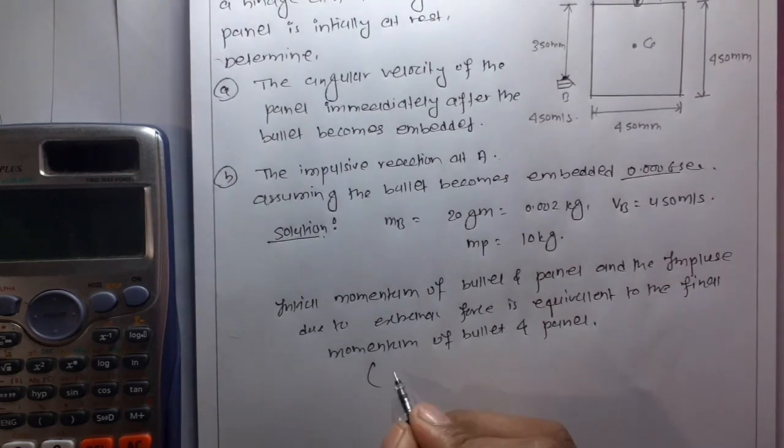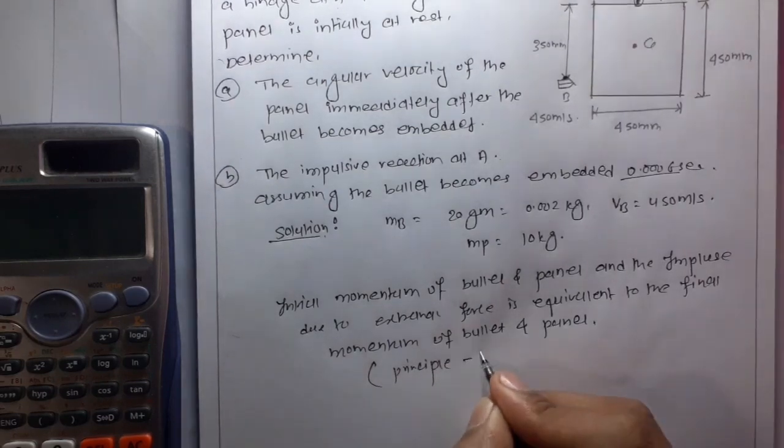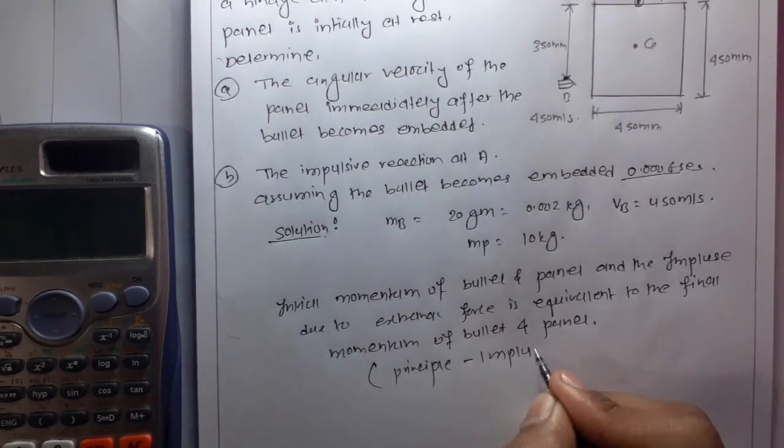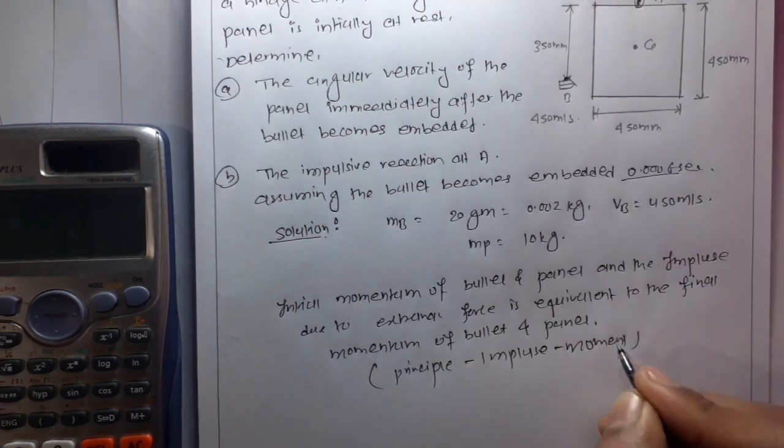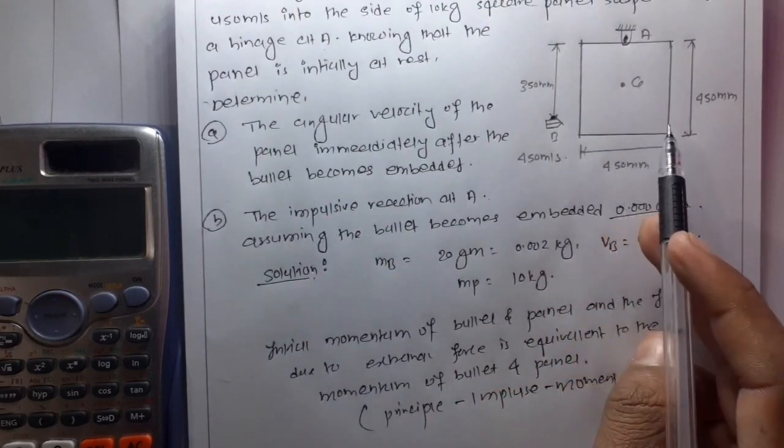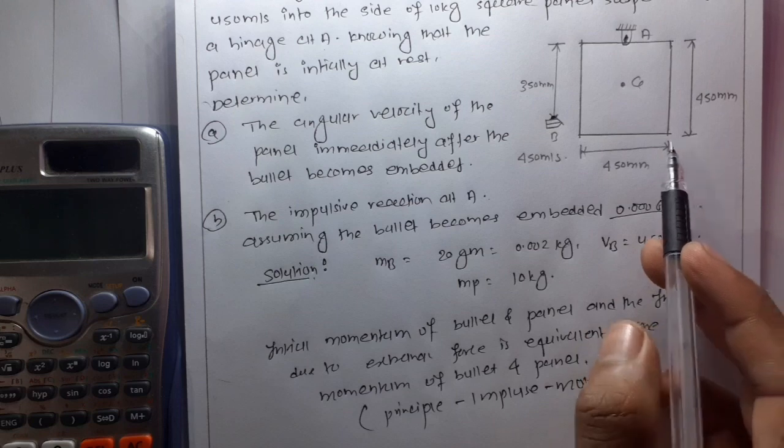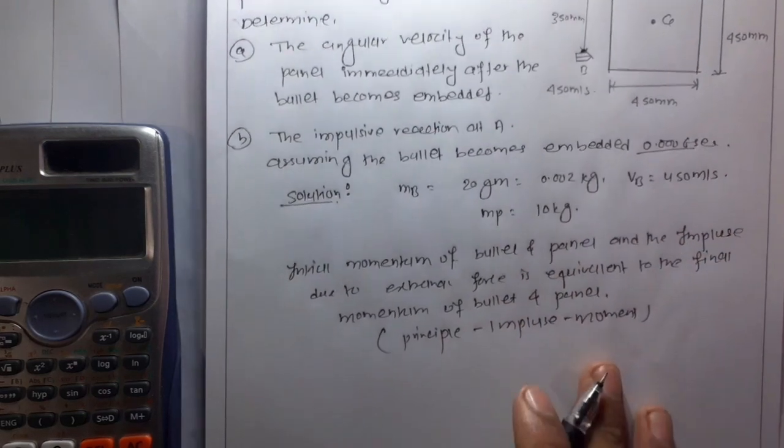The principle of impulse and momentum: the initial moment of the panel and bullet is equal to the impulse due to the external force, which is equal to the final moment of bullet and panel.